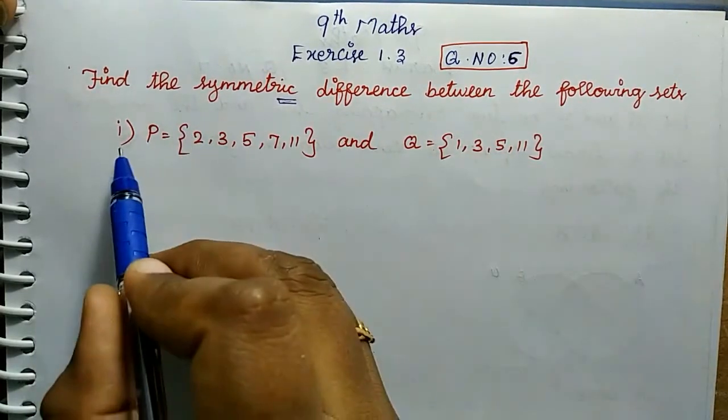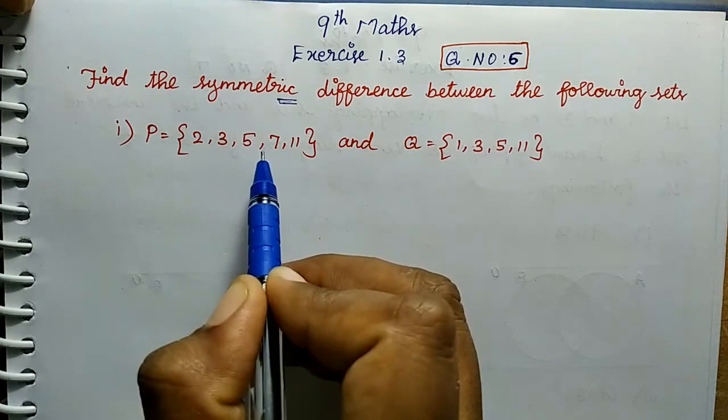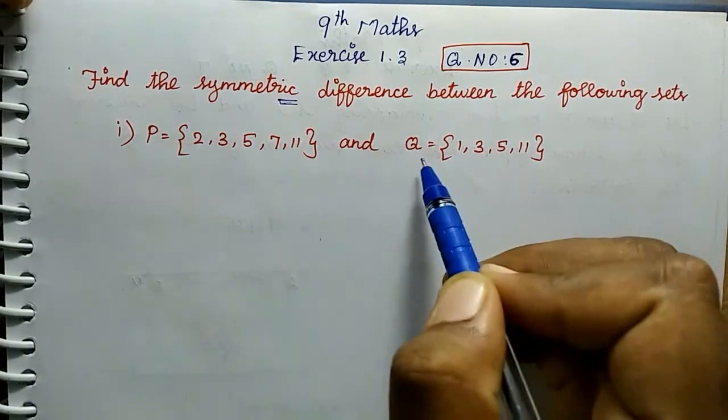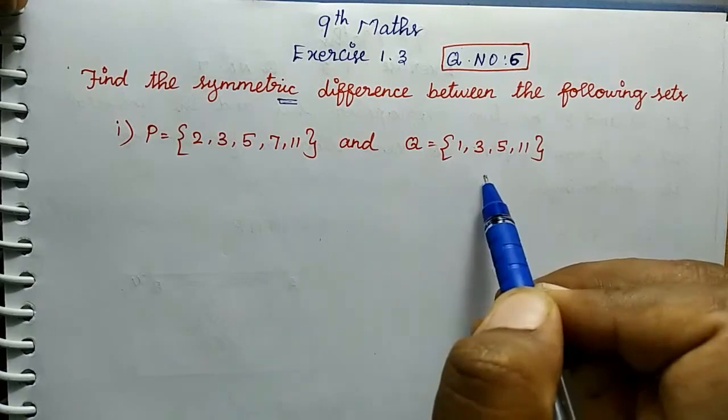So here you can find the first sum: P is equal to set of 2, 3, 5, 7, 11 and Q is equal to set of 1, 3, 5, 11. So in the value you can find what we can find.